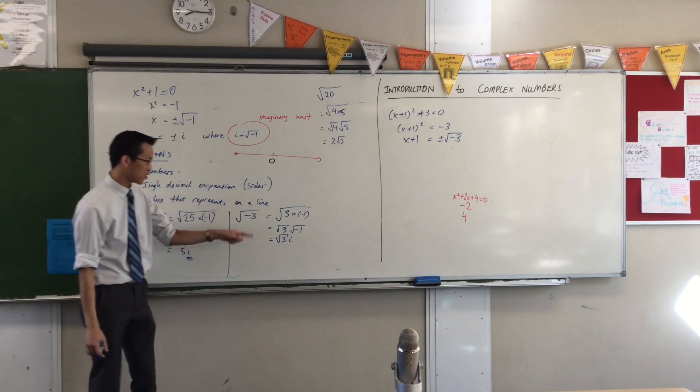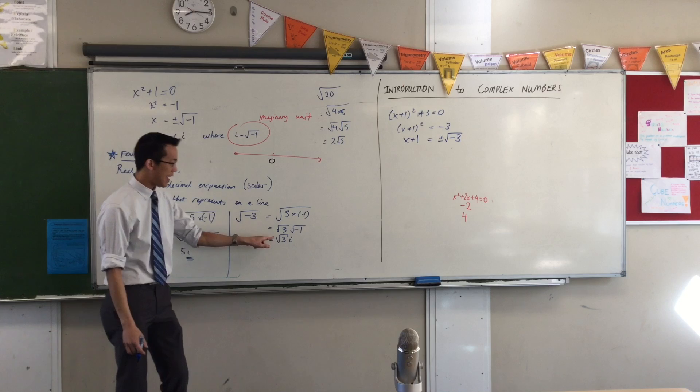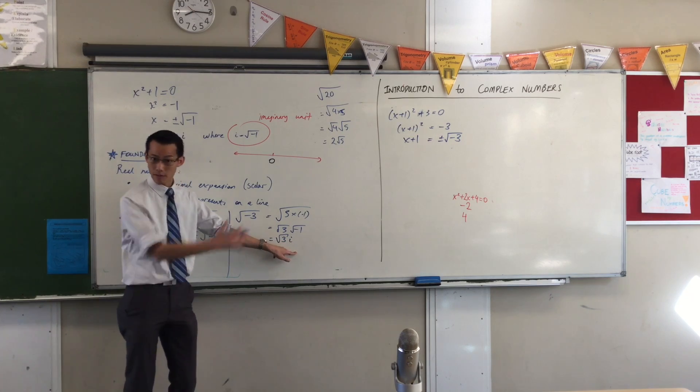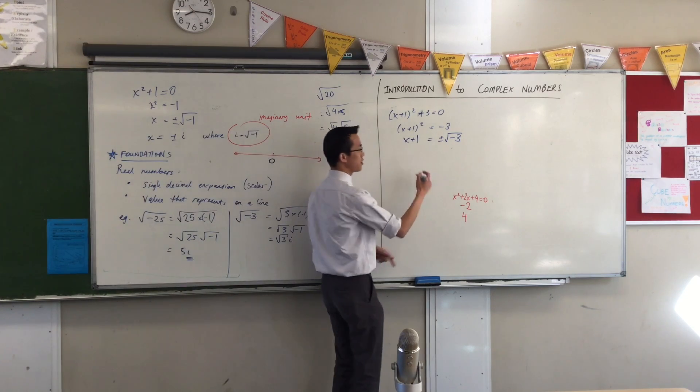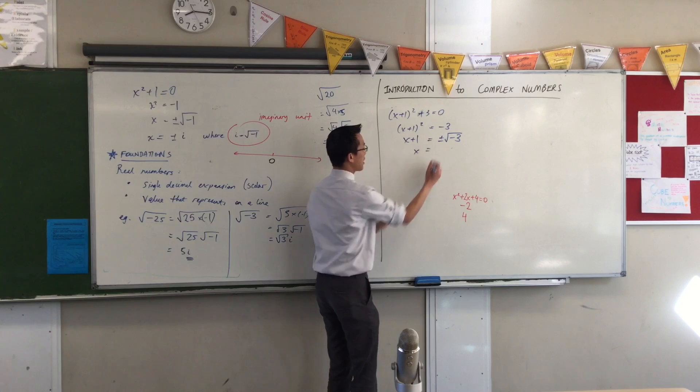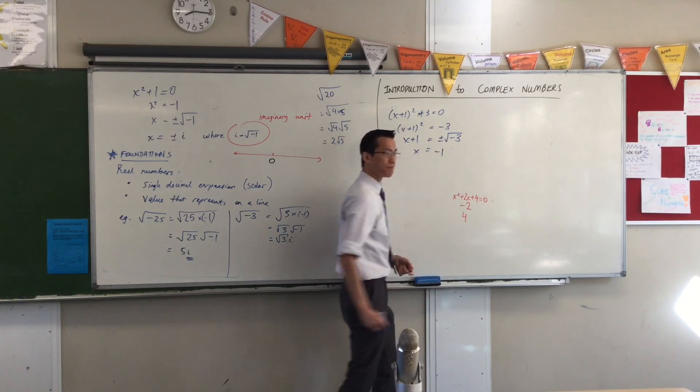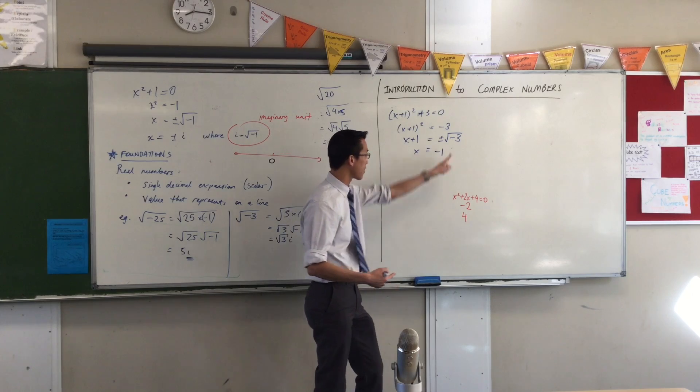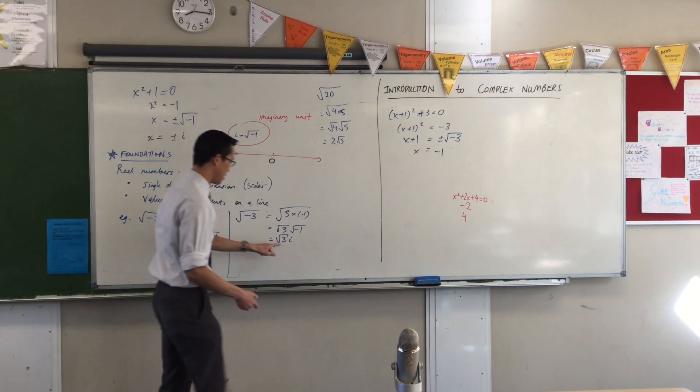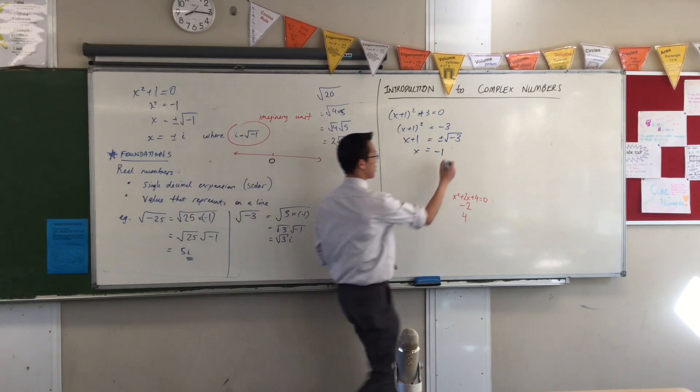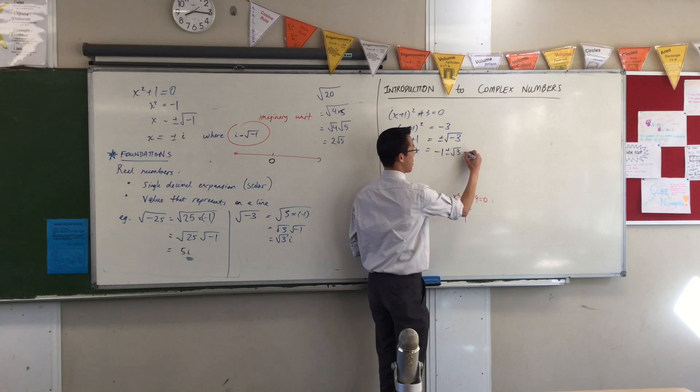But I can rewrite the square root of negative three as √3 i. I've already established this. So I'm going to do two things here. Number one I'm going to subtract one from both sides that gives me negative one and then I'm going to rewrite this as √3 i. So it's plus or minus √3 i.